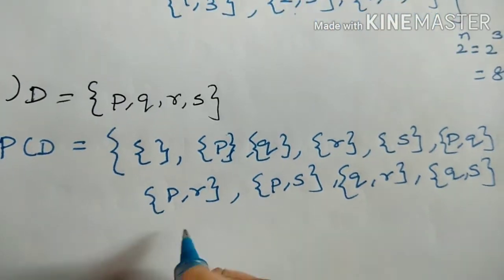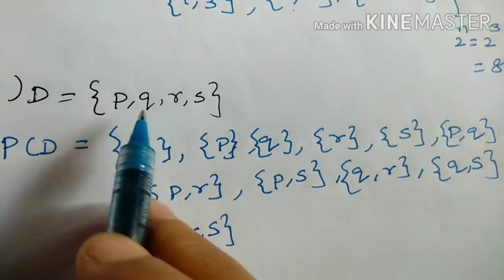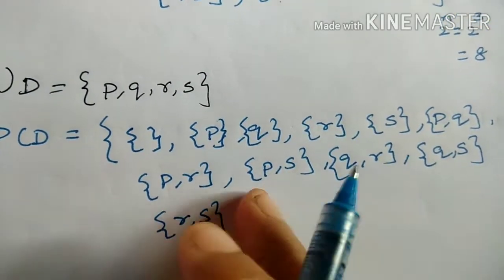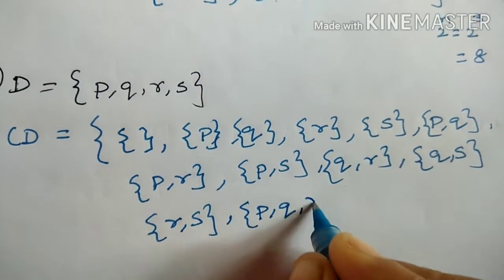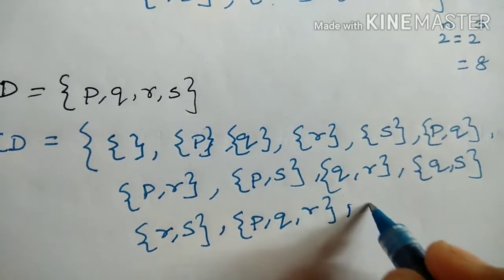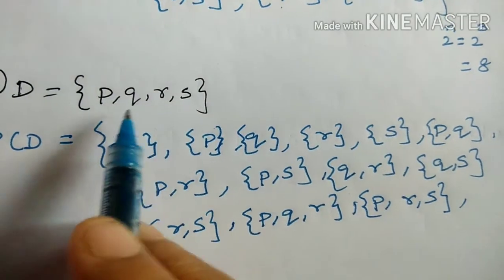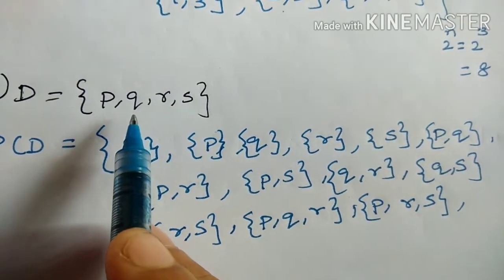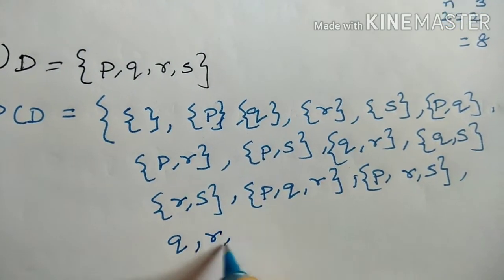Now, we have to write three elements. {P, Q, R}. Next, {P, R, S}. {P, Q, S}. Next, {Q, R, S}.